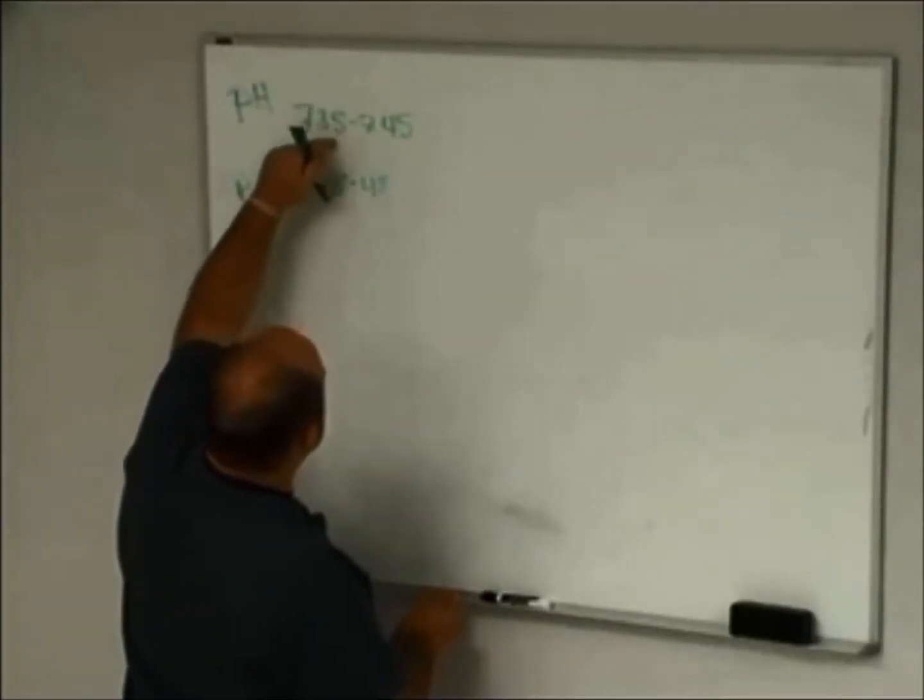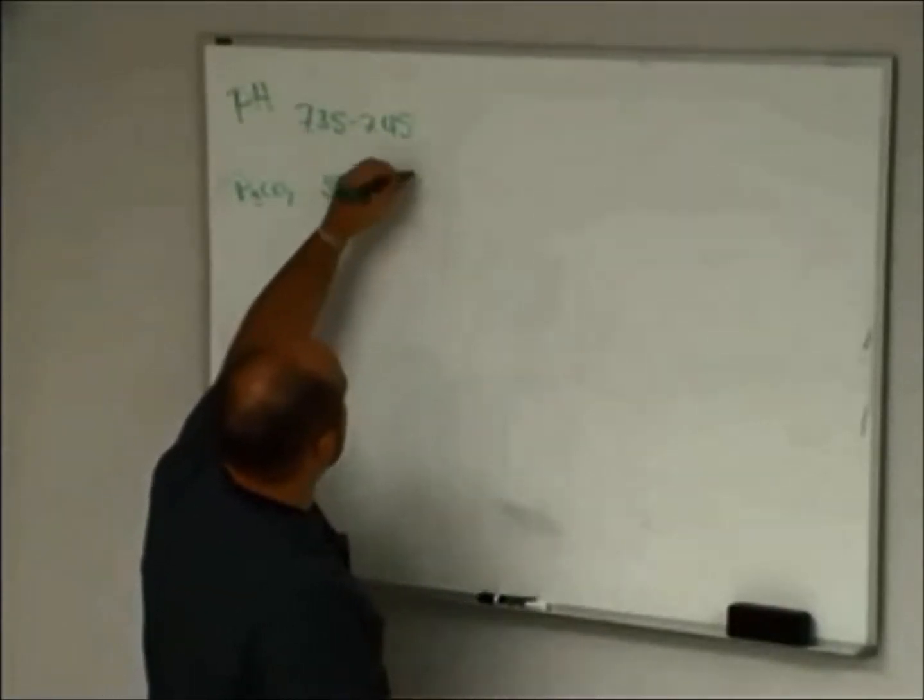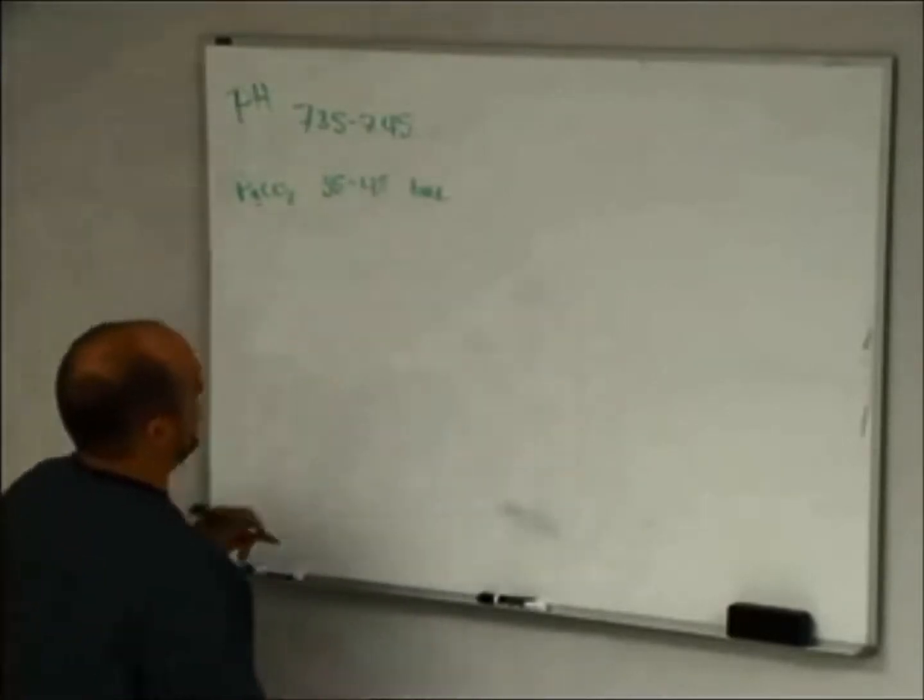Well, it looks like these numbers right here, right? So they transpose down, so it's pretty easy to remember those normal values. This is measured in millimeters of mercury or torr, and of course pH doesn't have units.